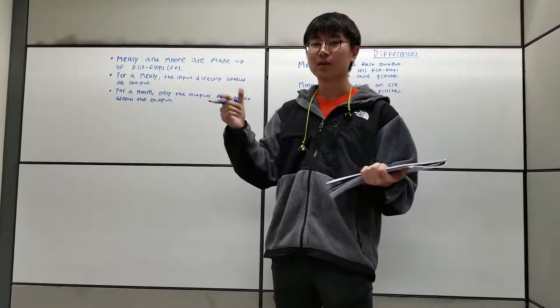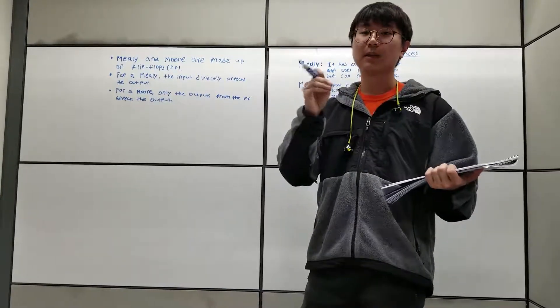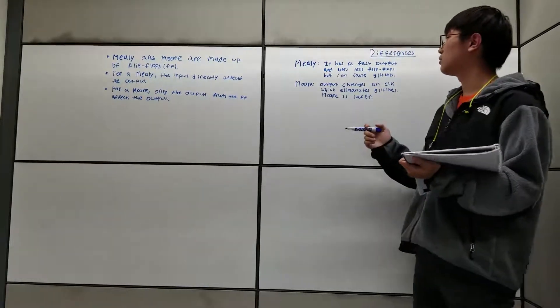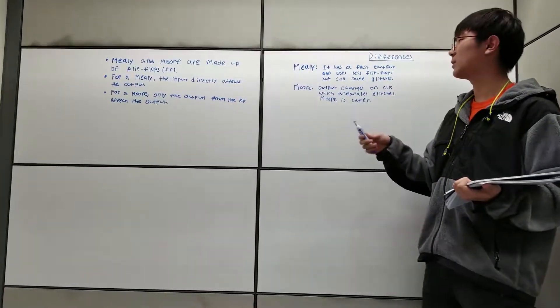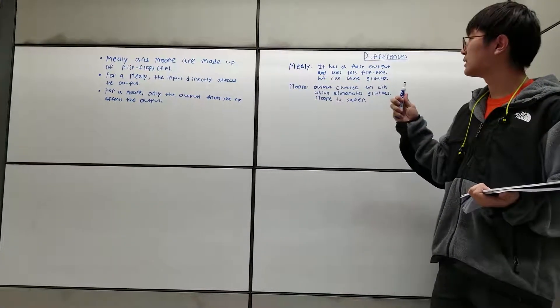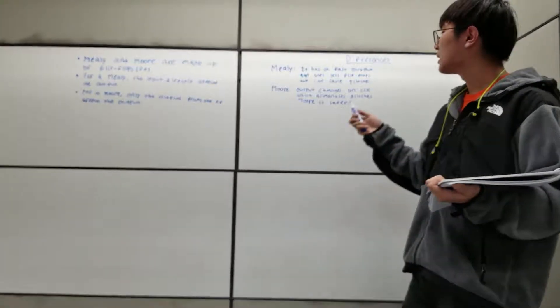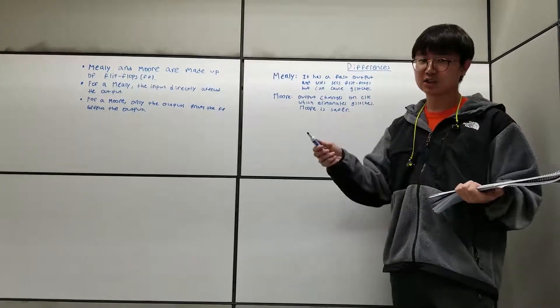But for a Moore, only the outputs from the flip-flop affect the final output. When you look at the differences between Mealy and Moore, you can see that Mealy has a faster output and uses less flip-flops, but Mealy can cause glitches.